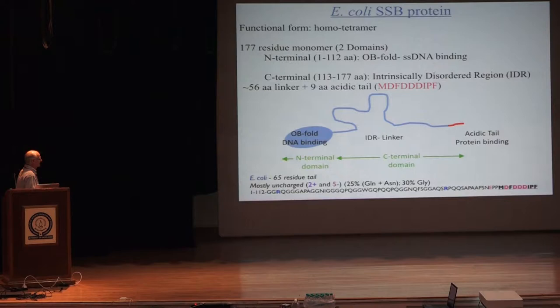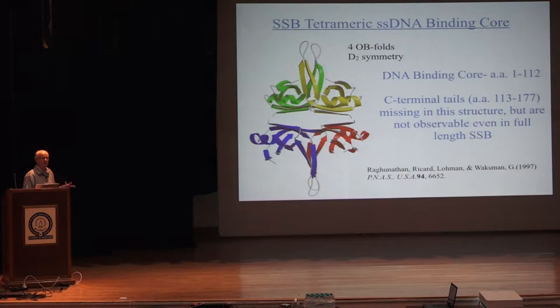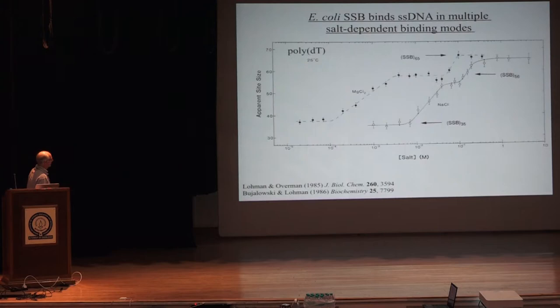This is a schematic of the homotetrameric structure of the protein. In the crystal structure, the C-terminal tails were actually cleaved, although we also have structures of the full-length protein, and the C-terminal tails are not visible even when the protein is bound to DNA — again consistent with them being intrinsically disordered.